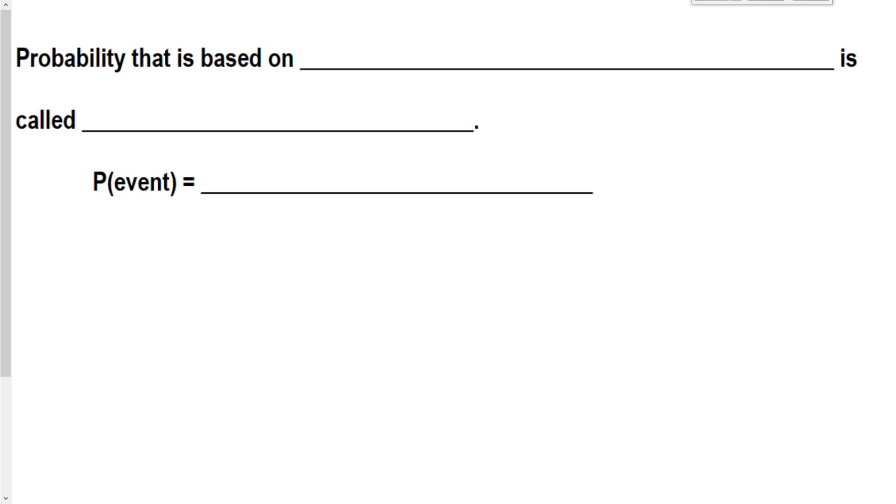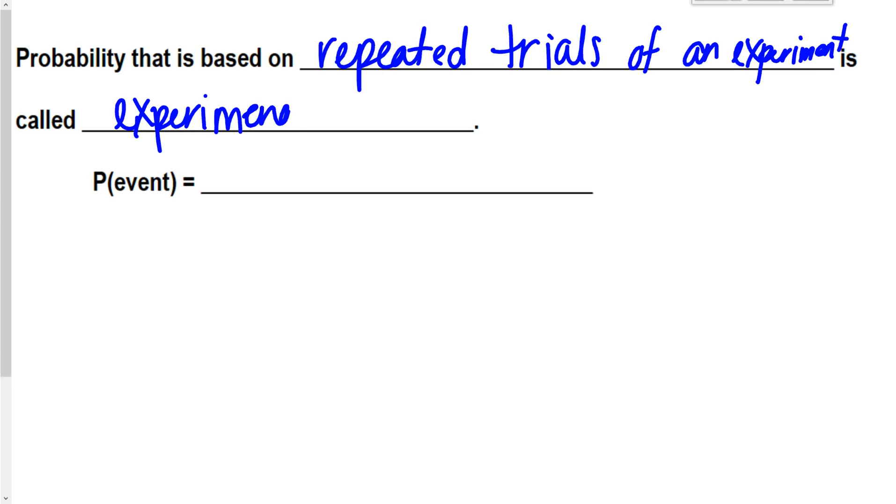First, I'm going to talk about what is experimental probability. So experimental probability is probability that is based on repeated trials of an experiment. That is experimental probability.